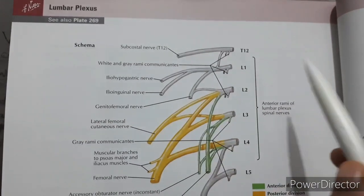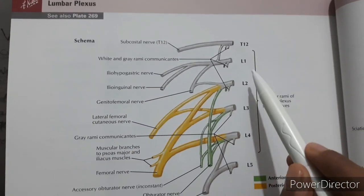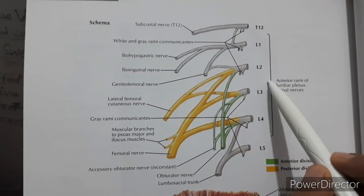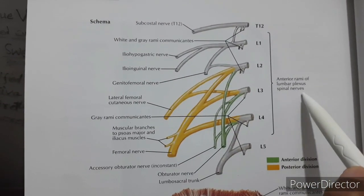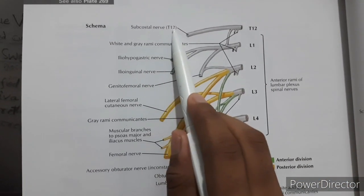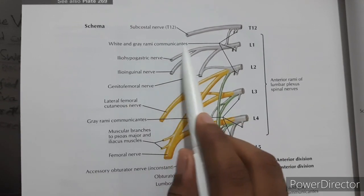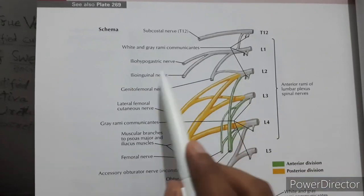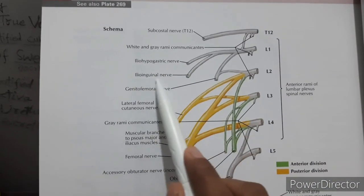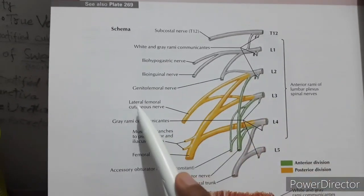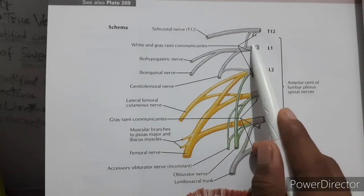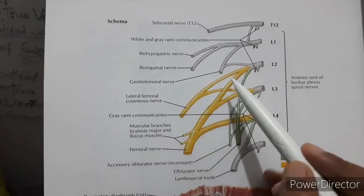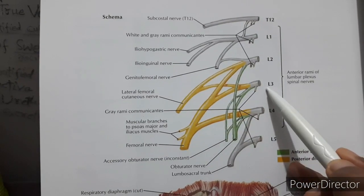Now we are going to see the lumbar plexus diagram. This shows T12, L1, L2, L3, L4, and L5 — the anterior rami of the lumbar spinal nerves. The subcostal nerve comes from T12, with white and gray rami communicantes from T12, L1, and L2. The iliohypogastric nerve arises from L1, the genitofemoral nerve from L1 and L2, and the lateral femoral cutaneous nerve from the dorsal division of L2 and L3.